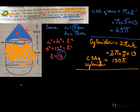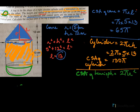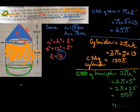Now the CSA of the hemisphere, which is the easiest. The formula is 2πr². Here r = 5, so 2π × 5² = 2π × 25 = 50π.